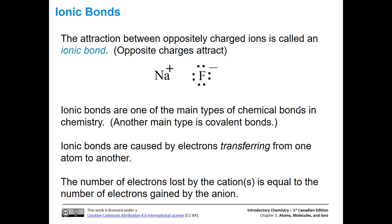Ionic bonds are one of the main types of chemical bonds. The other main type is covalent bonds, which we'll talk about later. In contrast to covalent bonds, ionic bonds are caused by electrons actually transferring from one atom to another. The number of electrons lost by the cation is equal to the number of electrons gained by the anion. We can have more than one cation or anion, using the lowest common multiple, so that the cation charge is fully canceled out by the anion charge.